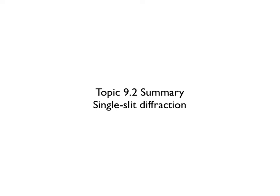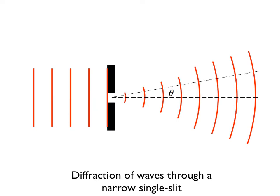Topic 9.2 summary: single slit diffraction. You already know that when a wave passes through a slit, diffraction occurs and that causes the wave to spread out like this.